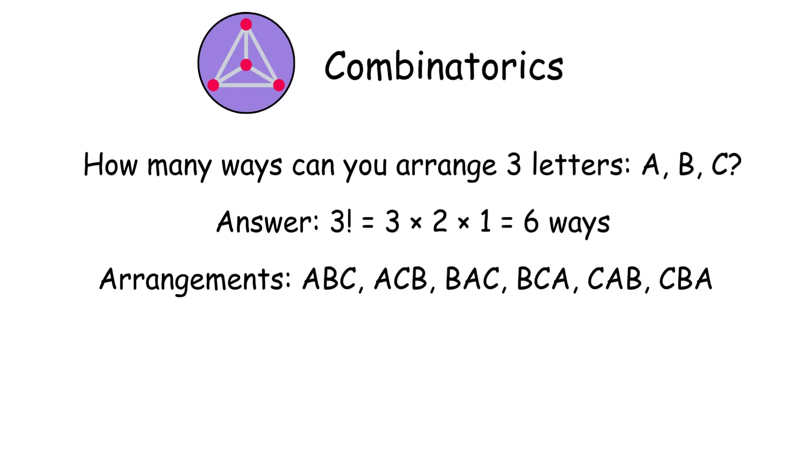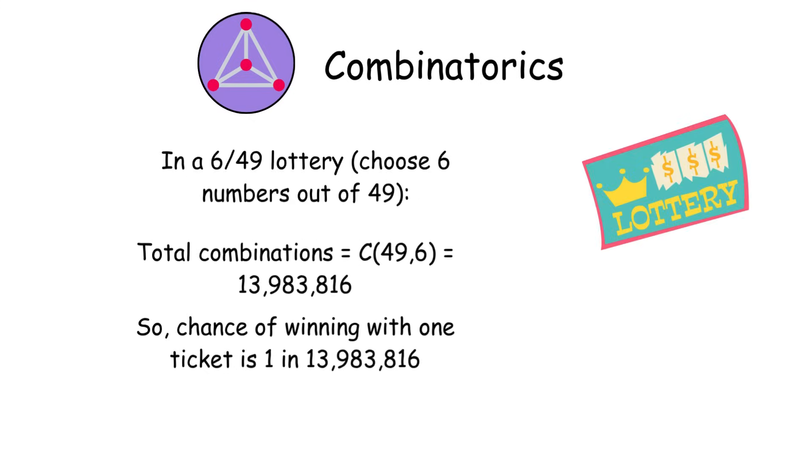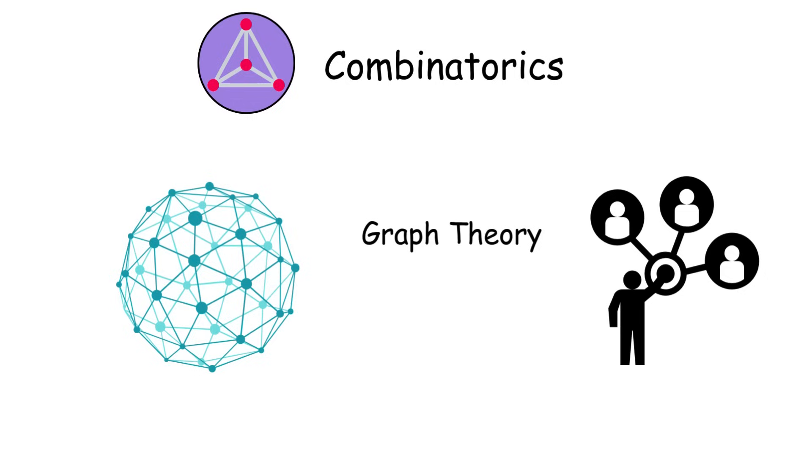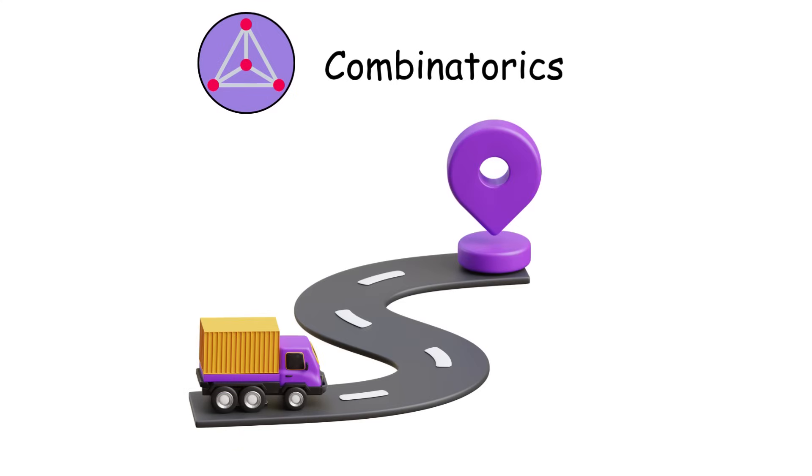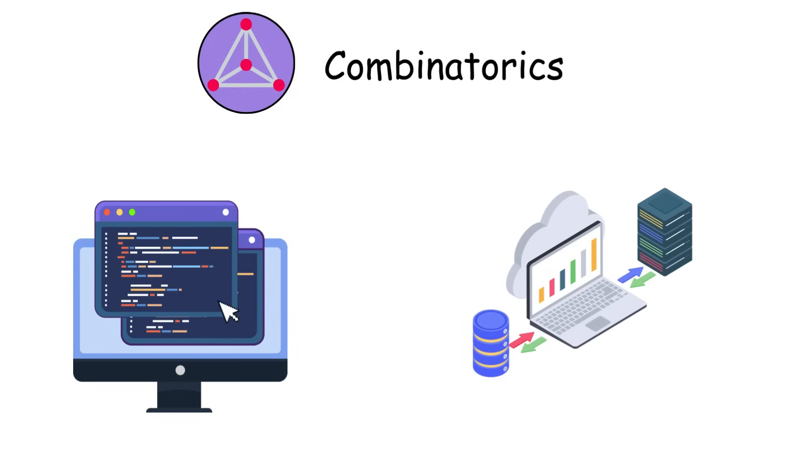Combinatorics. Combinatorics is about counting and arranging separate objects. It uses permutations and combinations to figure out possibilities, like the chances of winning a lottery. Graph theory studies networks by using nodes and edges to show connections, such as links in social media. Combinatorial optimization helps find the best solutions, like the shortest routes for deliveries.